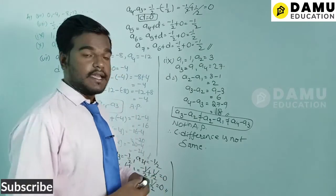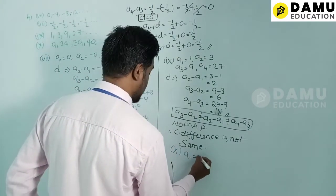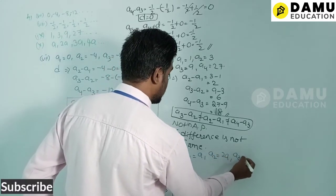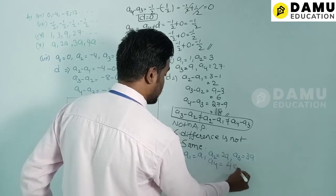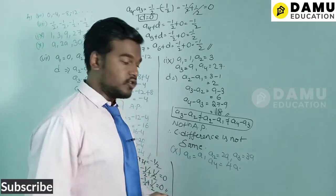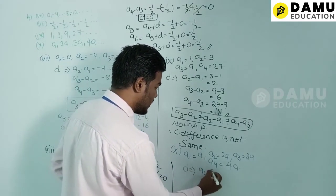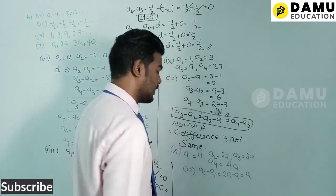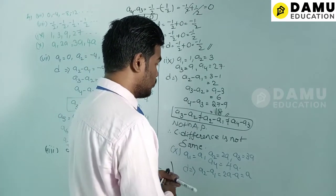For the tenth series: a1 = a, a2 = 2a, a3 = 3a, a4 = 4a. The common difference d = a2 − a1 = 2a − a = a.